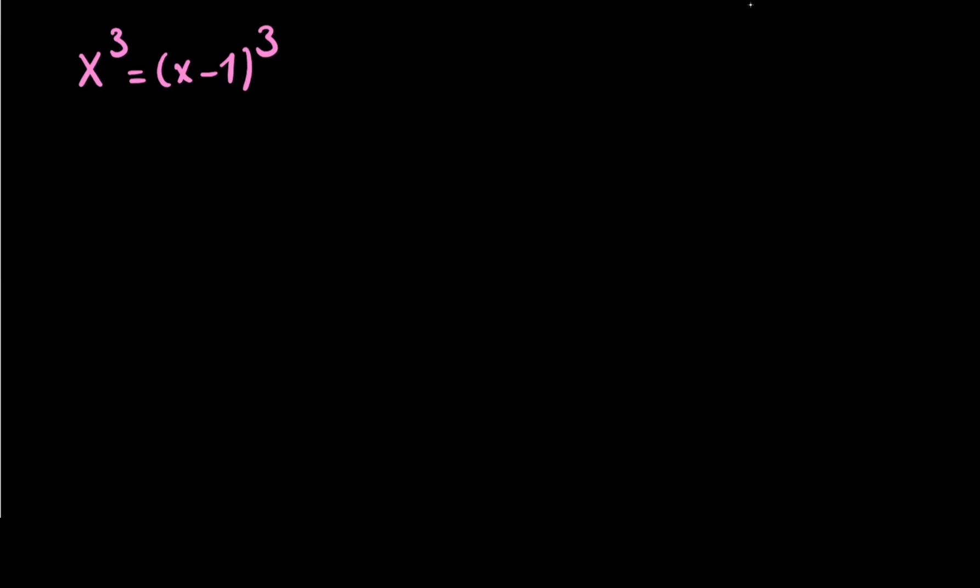Welcome to Math Speed Marker. Today we're going to solve a really nice problem. If you have X³ = (X-1)³, we want to find X in this equation. Of course, we know that X is a complex number. If I move this one to the left side, we can write X³ - (X-1)³ = 0.